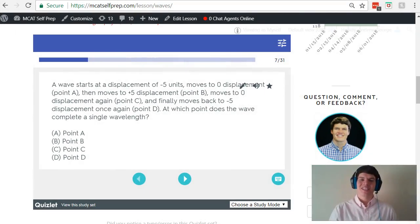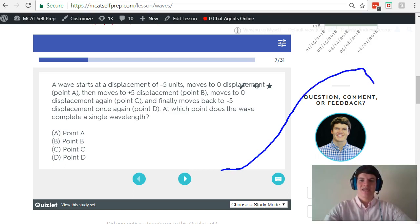Let's take a second look at our question stem. It says the wave starts at a displacement of negative 5 units, moves up to 0 units, moves up to plus 5 displacement, back down to 0 displacement, and then back down to negative 5 displacement. We're going from a point of maximum displacement to maximum displacement.